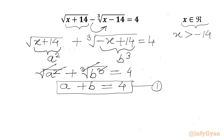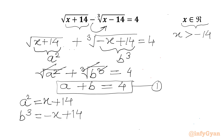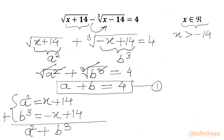Now I can write a squared equals x plus 14, so x equals a squared minus 14. And b cubed equals negative x plus 14. Now we add these two equations: a squared plus b cubed equals 28. This is equation 2.